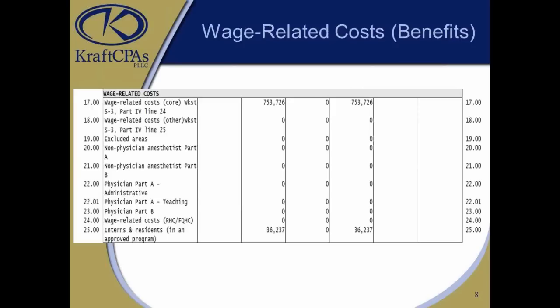Moving to slide 8, we're looking at benefits. On slides 8 and 9, we have core benefits and other costs. Core benefits are simply the benefits related to the salaries for the medical surgical hospital. As you go down, the other lines are benefits related to the items noted above — if it's a teaching hospital or if there are excluded areas such as a psych unit or home health agency, those benefits are backed out. Line 25 shows benefits related to interns and residents.